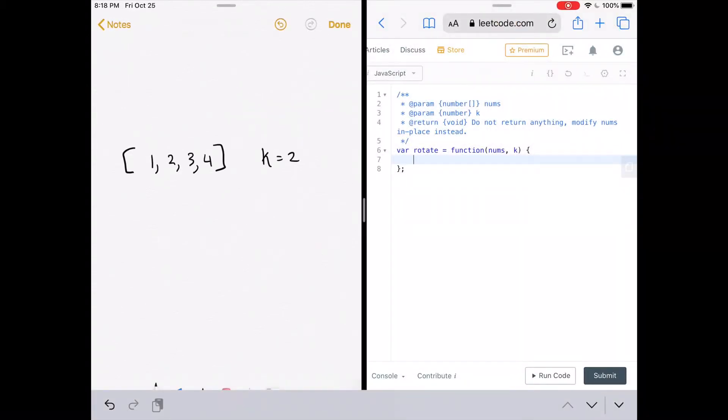Alright, so let's get to the code. LeetCode has given us a function called rotate which accepts an array called nums and k, which is the number of times we need to rotate that array. So remember the first thing we have to do is whatever k we have, we have to do the modulus on it of the length of the array.